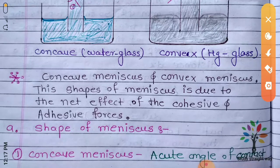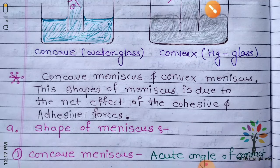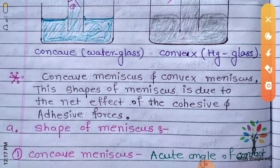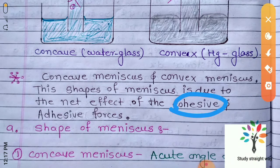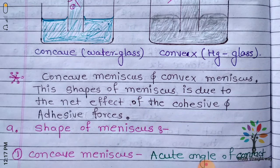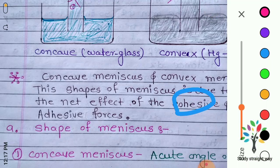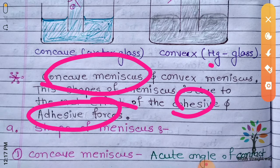This is the same subject as the previous lecture. We will discuss cohesive and adhesive force. The adhesive force is between molecules of solid and liquid, and the cohesive force is between molecules of the same liquid. The effect of cohesive and adhesive force determines the shape of the meniscus, which will be convex or concave.